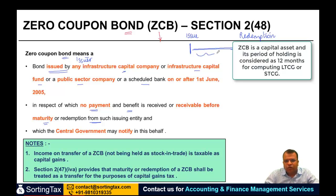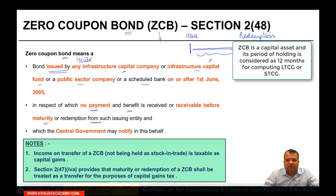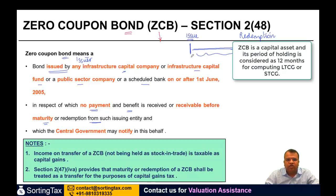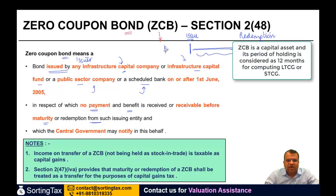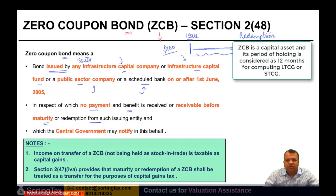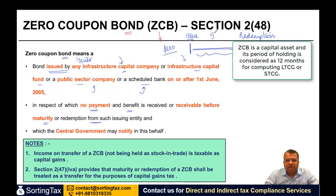During this period, you will not get any benefit. For example, a zero-coupon bond issued by an infrastructure capital company, infrastructure capital fund, public sector company, or a scheduled bank — you get no benefit during the period from issue date to redemption. If this bond was $100 and the redemption price is $150, and the period is 5 years, you will not get any benefit during those 5 years.